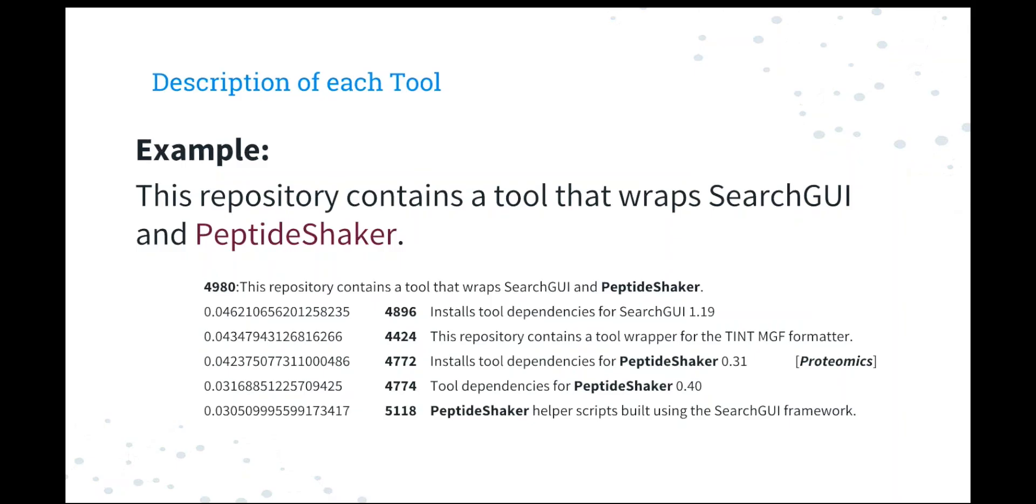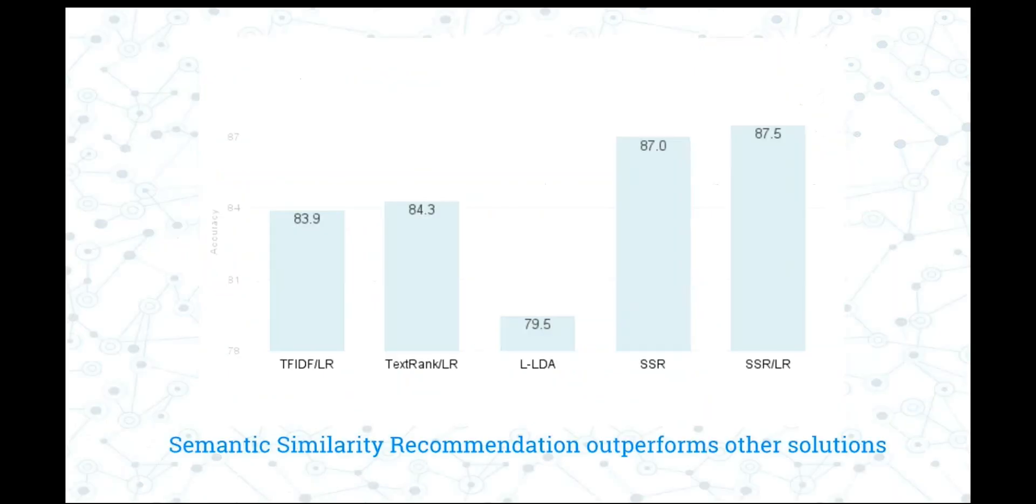And this is the result we got. And we can see that the SSR and SSR with logistic regression got a very good result, about 87.5% accuracy.